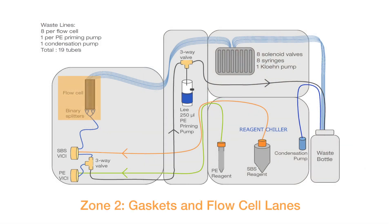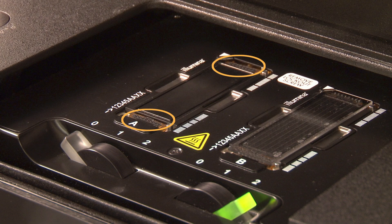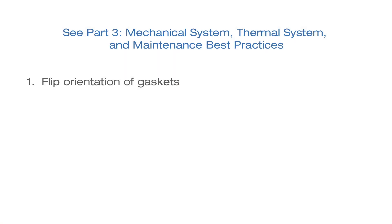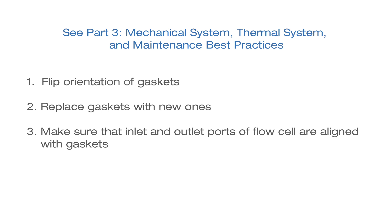If a single lane is blocked or there is slow flow, then the issue may be with the gaskets. As demonstrated in Part 3 of this video series, flipping the orientation of the gasket in the front or back of the flow cell can help determine if the blockage is related to the gasket. If the blockage follows a particular inlet or outlet on the gasket, replace gaskets with new ones. If the blockage remains with the original lane or lanes, then the gaskets are not the source of poor flow. The inlet and outlet ports of the flow cell may not be aligned with the gaskets — visually inspect the alignment and position the flow cells to ensure proper flow.